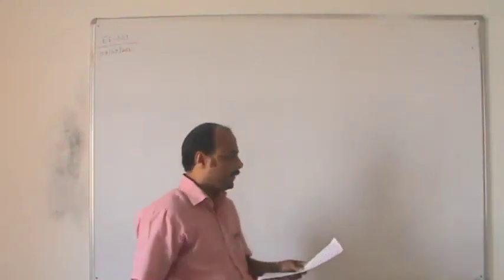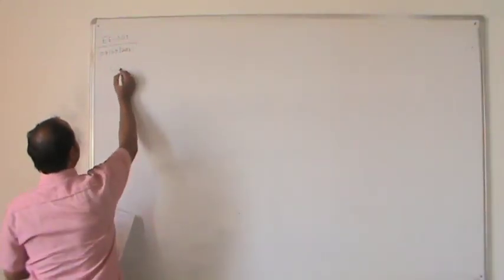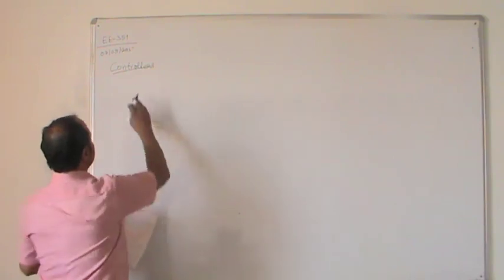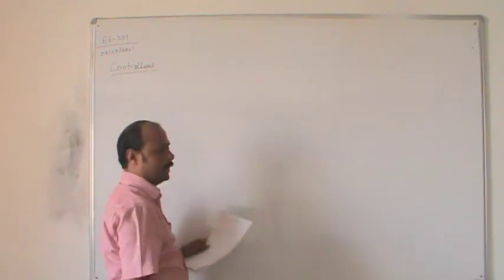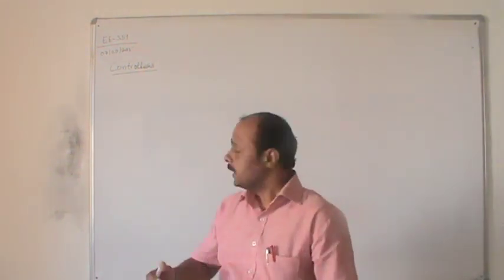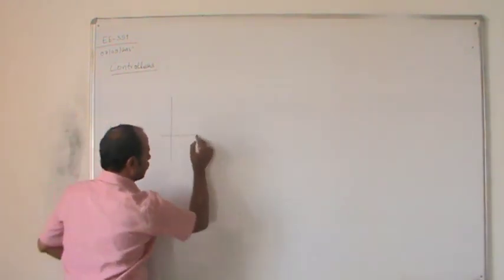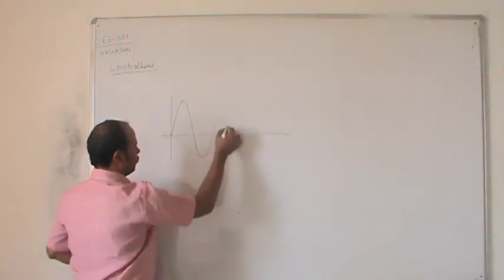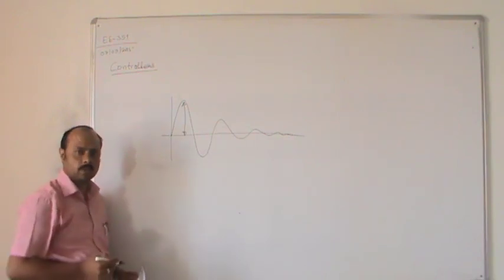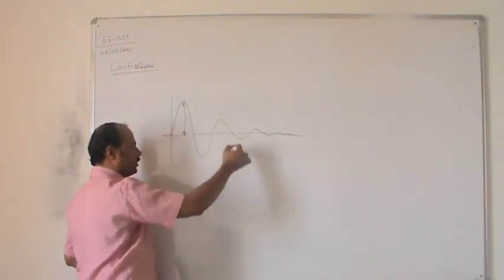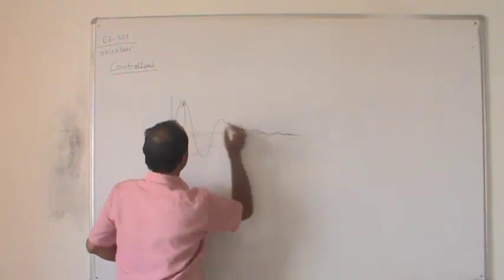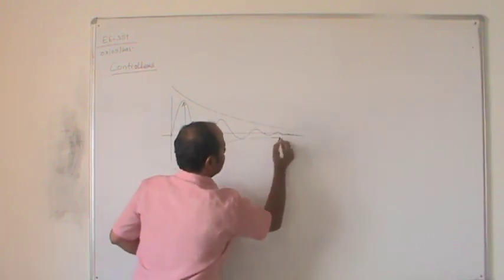Today we will discuss controllers, which are used for implementing system performance, meaning the system response. If we have some problem in the response, we can consider one system. If the system is getting overshoot like this, this is the peak overshoot, and since the peak overshoot is large, it is taking so much time to reach steady state. Let us say this is the band which can be considered for stability.